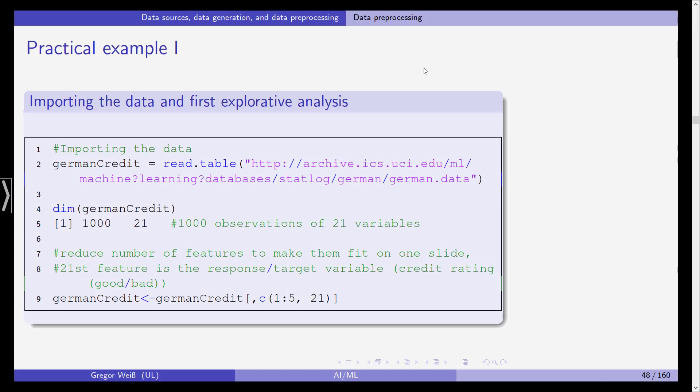Hello everyone and welcome back to our class in artificial intelligence and machine learning in finance. In the last video we looked at data preprocessing and this is what we'll do here in this example. This is the German credit data example taken from the UCI machine learning repository.